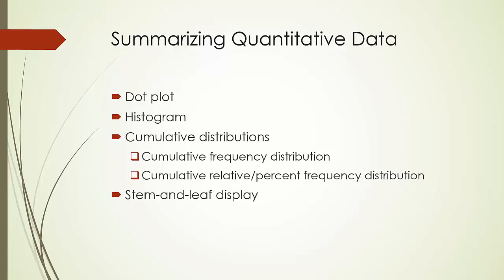In addition to frequency or relative frequency distribution, cumulative distribution is also often used to summarize quantitative data. In cumulative distribution, instead of showing the frequency or relative frequency of each class, the cumulative frequency distribution shows the number of data points with values less than or equal to the upper class limit of each class. Similarly, in cumulative relative frequency distribution, it shows the proportion of data points with values less than or equal to the upper limit of each class. A stem-and-leaf display is sometimes used to graphically display simultaneously the rank order and the shape of a distribution of data.